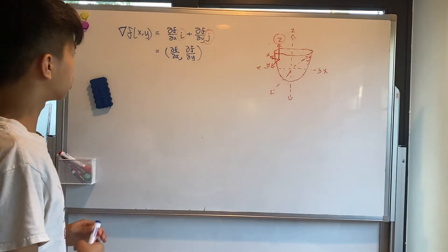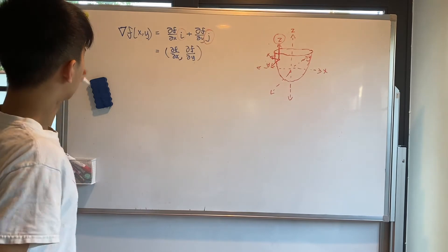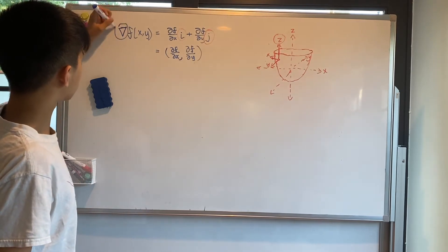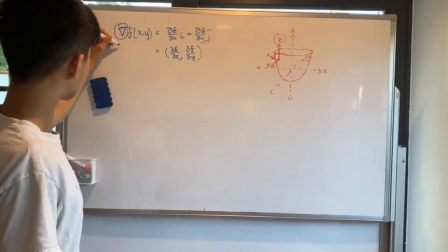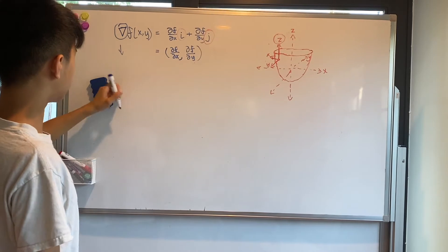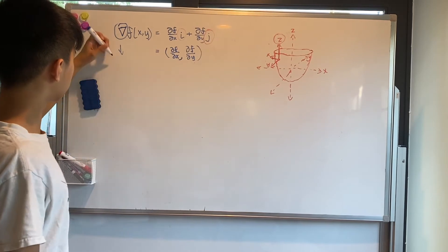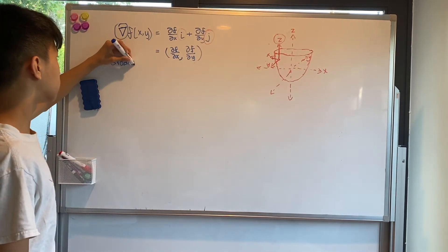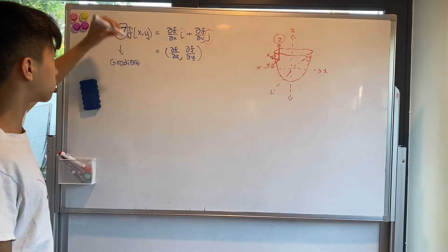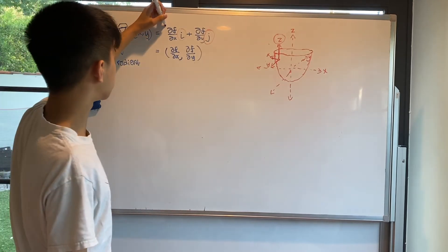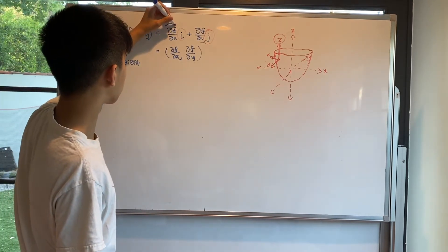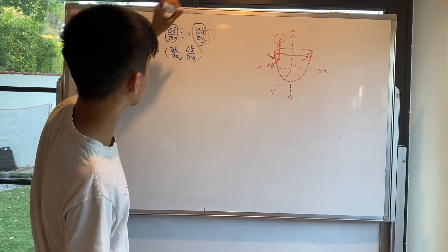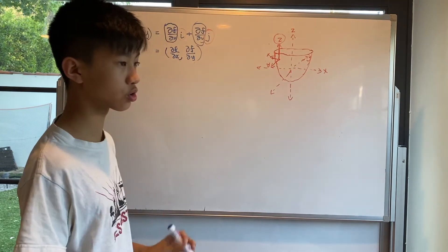So what does this triangle mean? Well, the triangle just means the gradient, and this symbol — this entire term — just means the partial derivative.